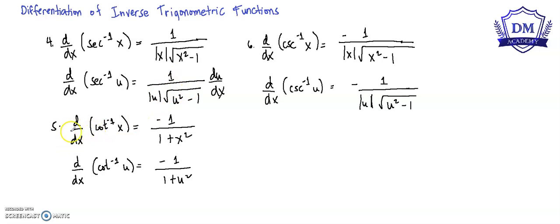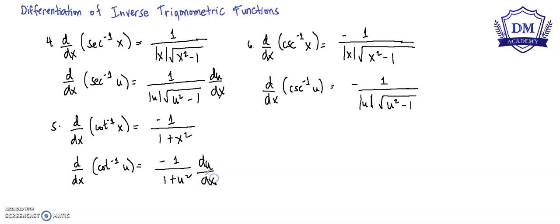For the inverse cotangent function, the derivative of the inverse cotangent of x is equal to the negative of 1 all over 1 plus x squared. And for the chain rule counterpart, the derivative of the inverse cotangent of u is equal to negative 1 all over 1 plus u squared, times the derivative of u with respect to x.